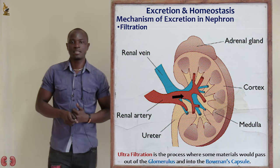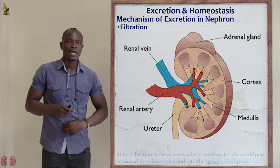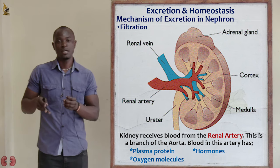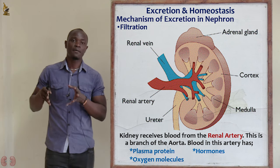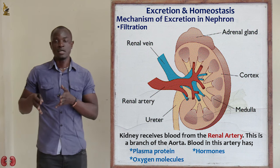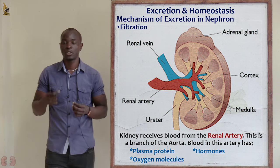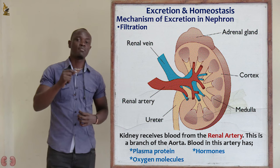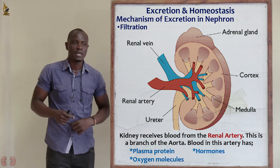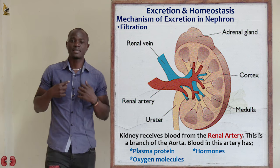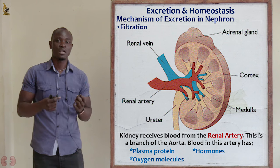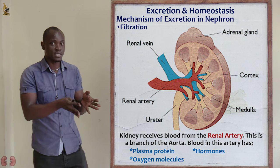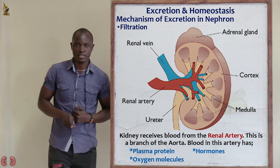For this filtration process, the kidneys receive blood from the renal artery, which is the branch of the aorta. The blood from the renal artery is rich in nitrogenous waste, excess water, excess mineral ions, and nitrogenous waste like urea. It also has oxygen, which is good — it has very many waste products.